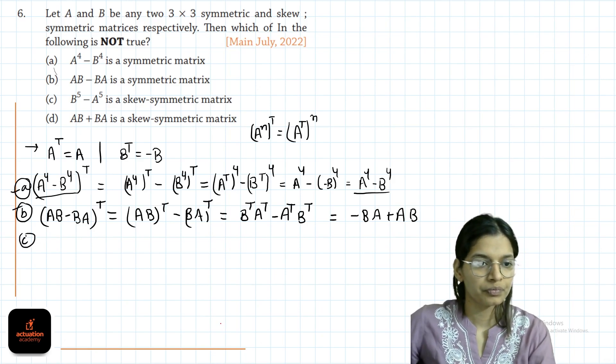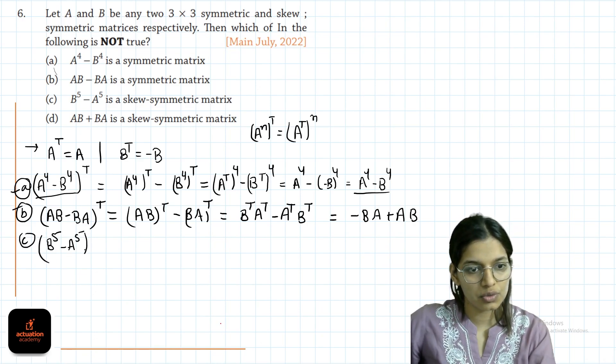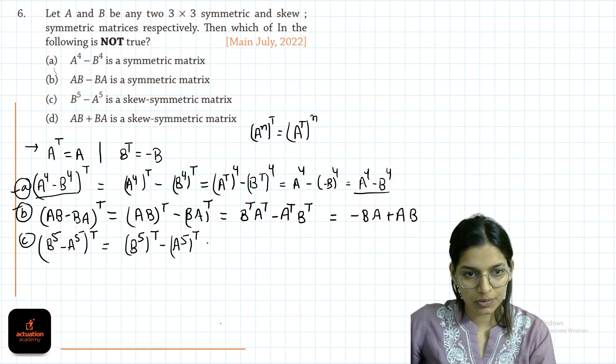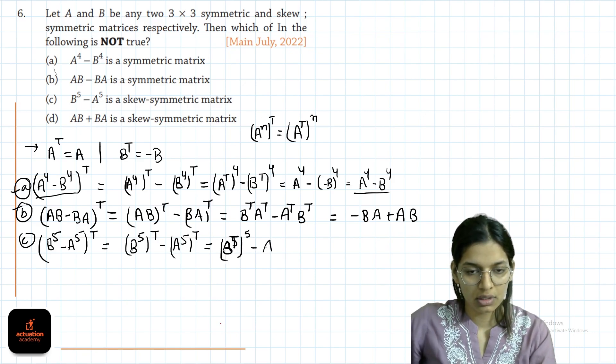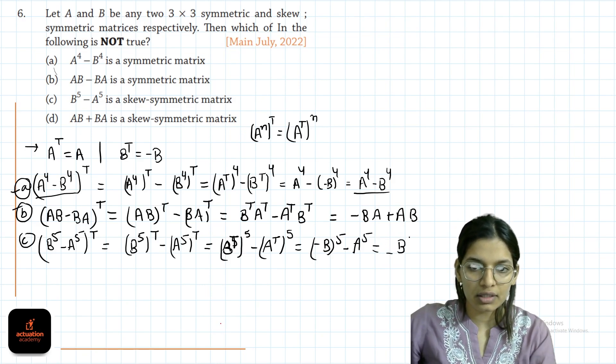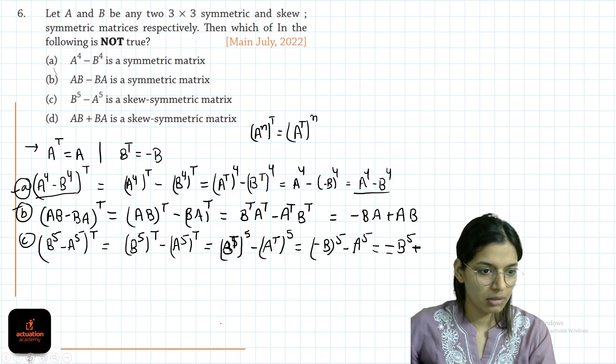Option C: B power 5 minus A power 5. Let's do the transpose. It will be B power 5 transpose minus A power 5 transpose, which is B transpose power 5 minus A transpose power 5, which is minus B power 5 minus A power 5.